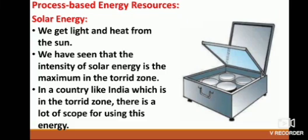Solar energy: We get light and heat from the sun. The intensity of solar energy is maximum in the torrid zone. In a country like India, which is in the torrid zone, there is a lot of scope for using this energy. There is a solar power plant at Sakri in Dhule district of Maharashtra. Devices like cookers, lamps, heaters, and vehicles can be run on solar power.